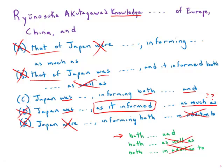D doesn't really work. The best answer by far is C. It is clear, direct, free of grammatical error. It is a sleek, powerful answer choice — by far the best answer here.